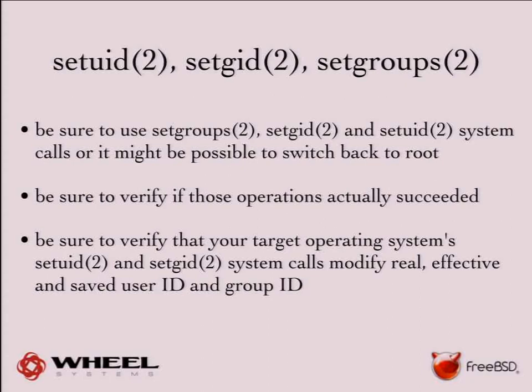You have to verify that all those operations actually succeed. There was a famous Sendmail security bug where Linux introduced POSIX capabilities — which despite the name are just global privileges — and Sendmail didn't check if setUID succeeded. So when it didn't have permission to change its user ID, it continued running as root without dropping any privileges.